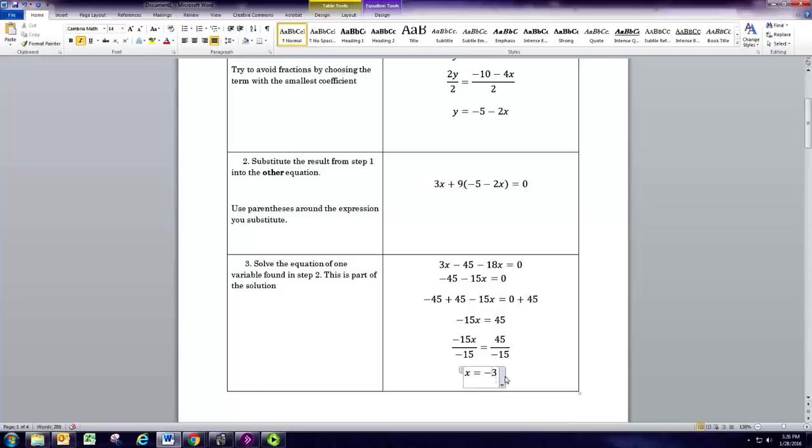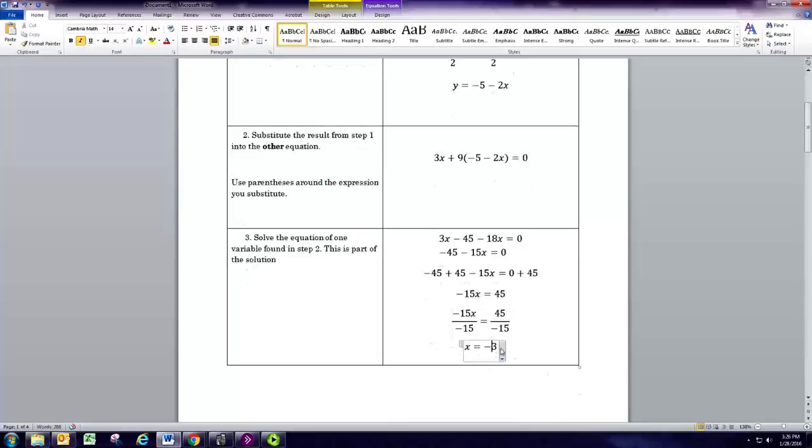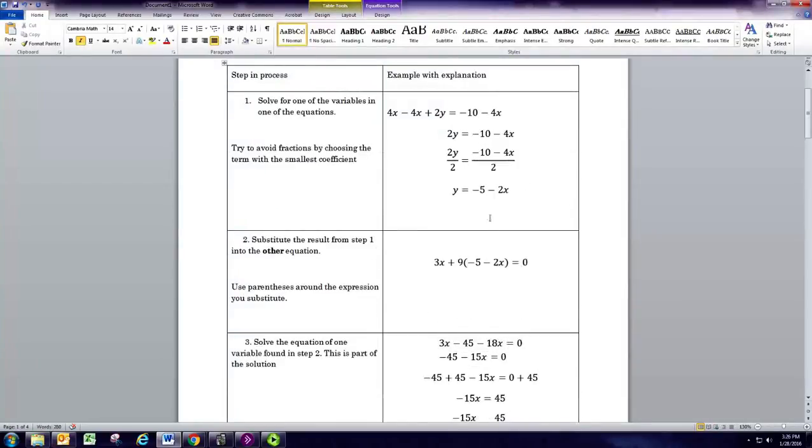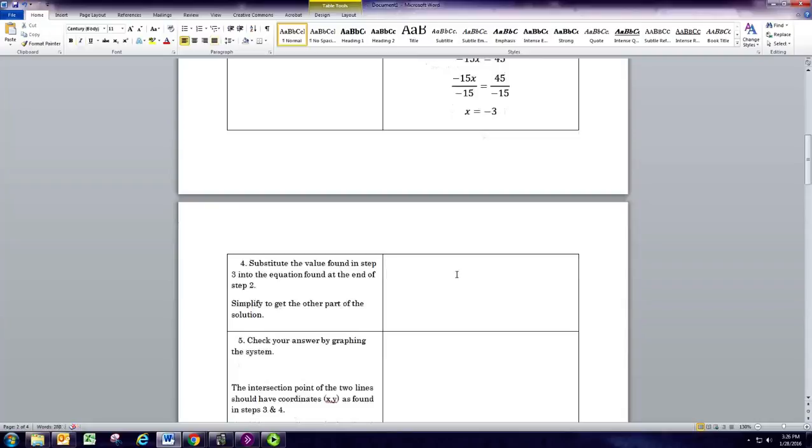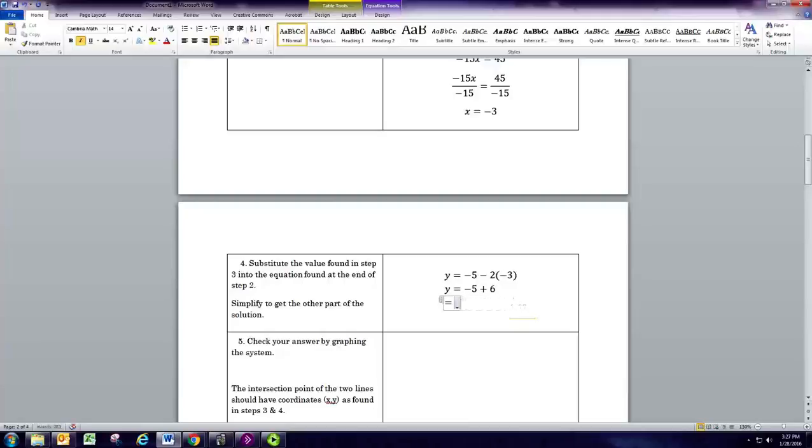Now this is just half the answer because there are two unknowns, x and y. So we need to figure out what y is. So we're going to take this and we're going to put it into the equation found at step 1. So we're going to take this equation from step 1 and we're going to substitute in for x, negative 3. And now we can get the value for y. Should be negative 5 plus 6. So y is 1.